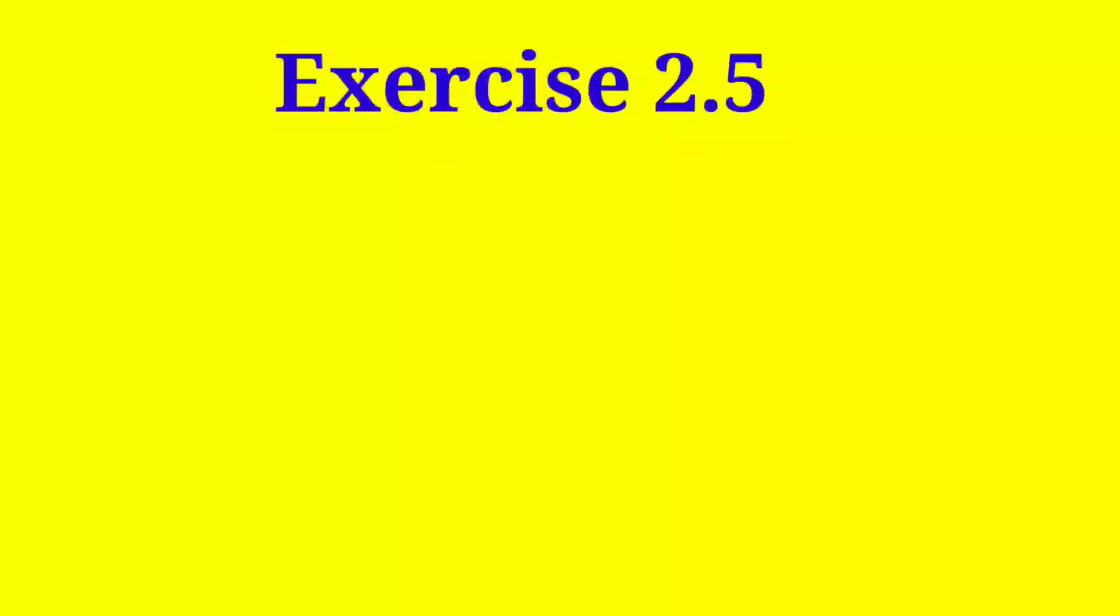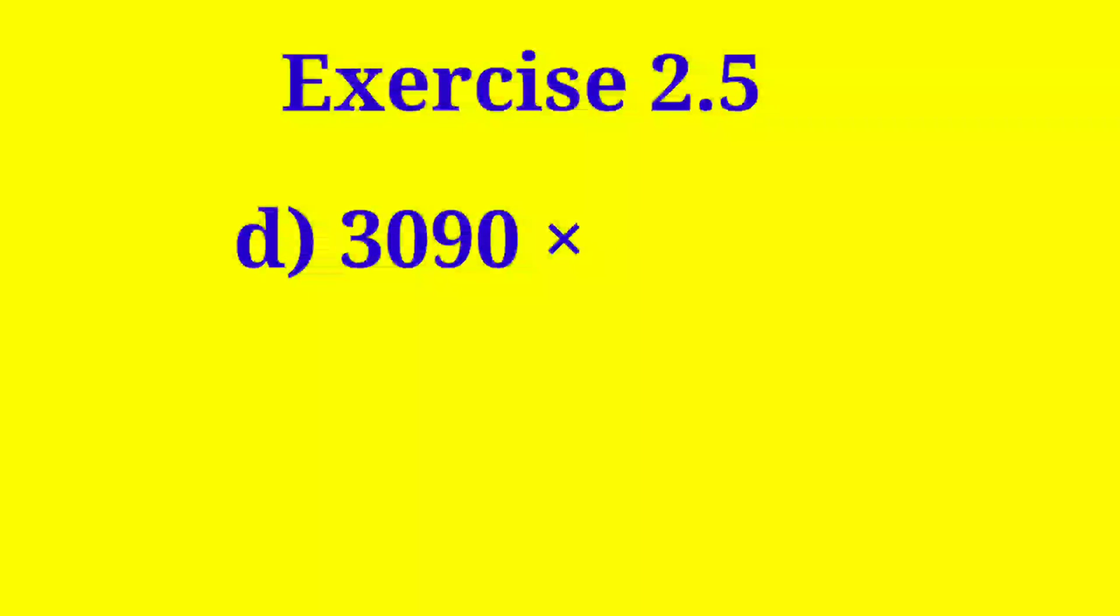Exercise 2.5 Part D. 3090 multiplied by 0 equals a blank. Now what will be the answer? Let there be any large number, but when it is multiplied by 0, it becomes 0. So 3090 multiplied by 0 equals 0.